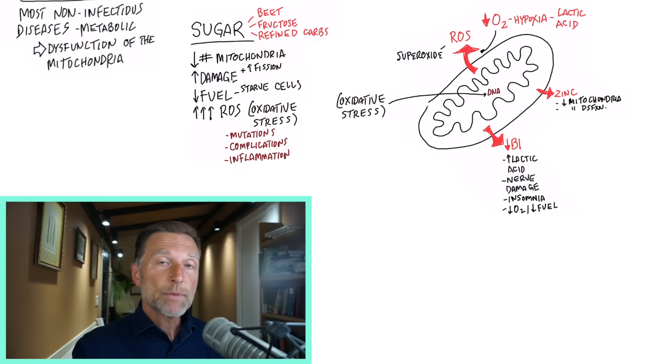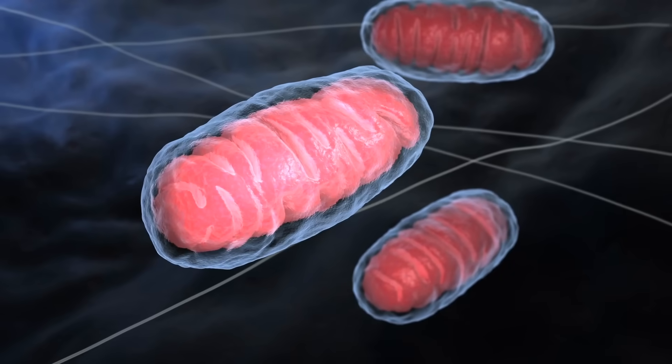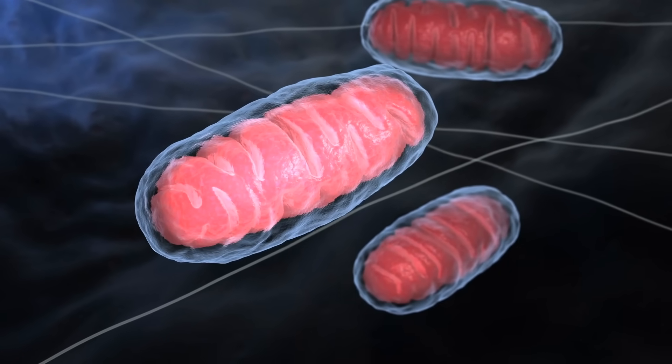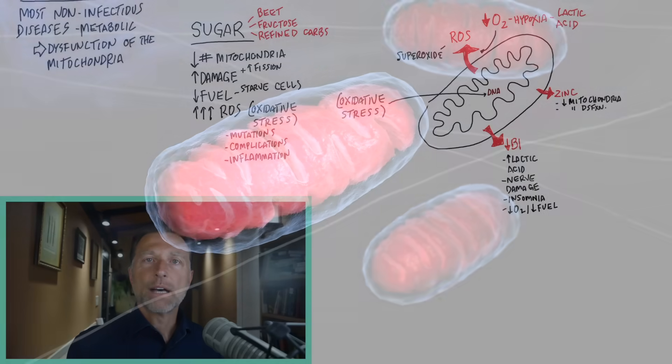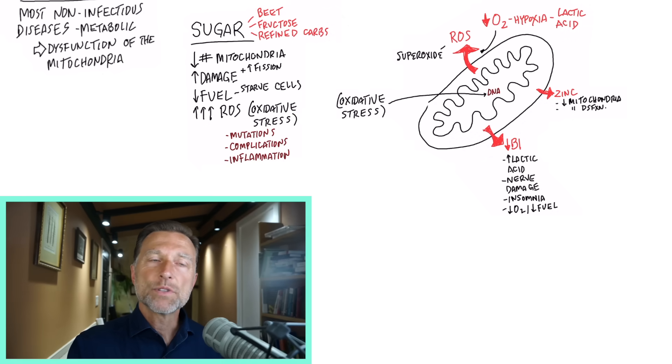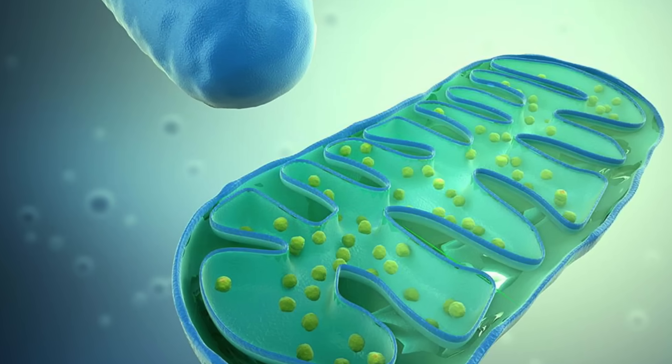But when we consume too much sugar, we get damage of the mitochondria. We get hypoxia, lack of oxygen. We get a mutation within the DNA of the mitochondria. We get decreased numbers of mitochondria. We get a lack of fuel produced by the mitochondria, starving off your cells, as in Alzheimer's, for example. If the mitochondria can't work, we can't produce fuel for the cells.